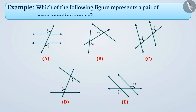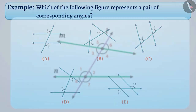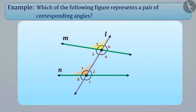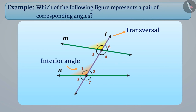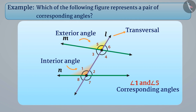Which of the following figures represents a pair of corresponding angles? In the previous video, we learned that when two angles have a different vertex and both angles are on the same side of the transversal, and one of them is an interior angle and the other one is an exterior angle, then such angles are called corresponding angles.